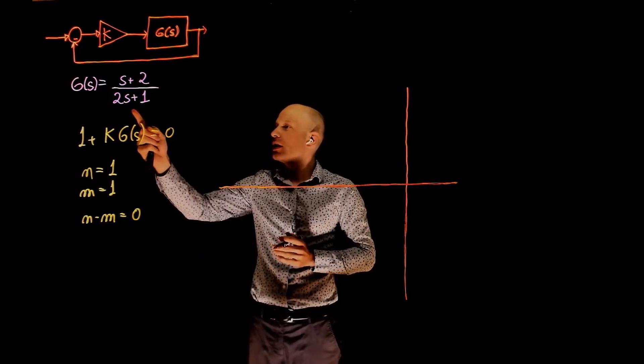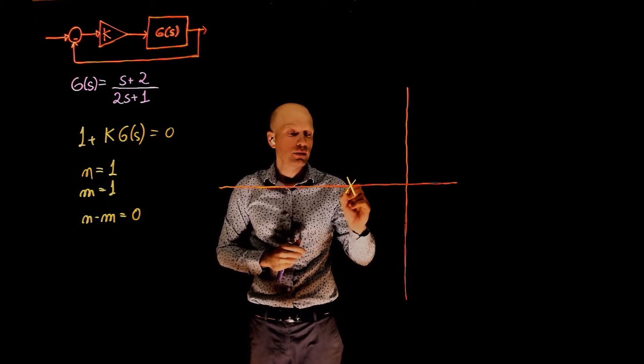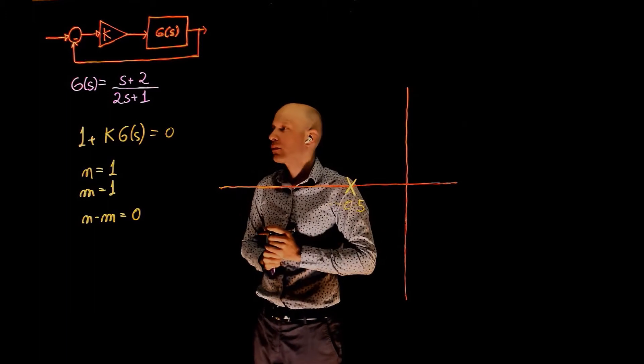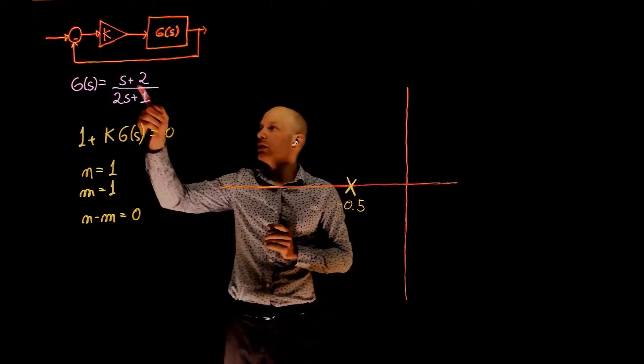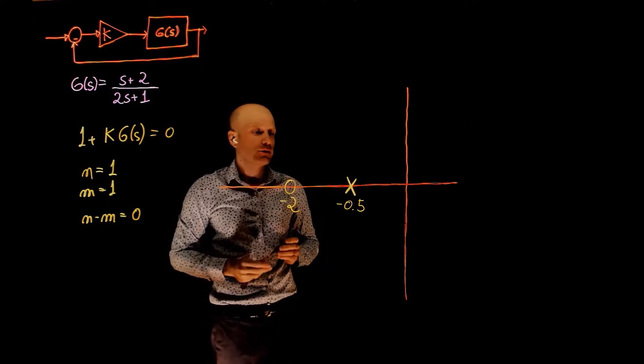The pole that we have here is negative 0.5, so let's draw the pole here, that is negative 0.5. And the zero is negative 2, so let's draw the zero here, that's negative 2.